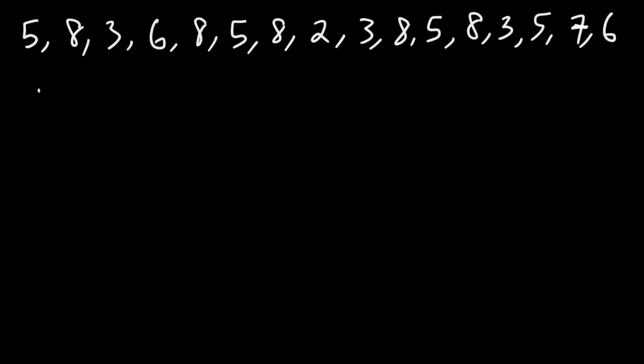First, let's make a frequency table. So we're going to need two columns. The first one is going to be the value. The second one is going to be the frequency. And let's start with the lowest value. The lowest value is 2.